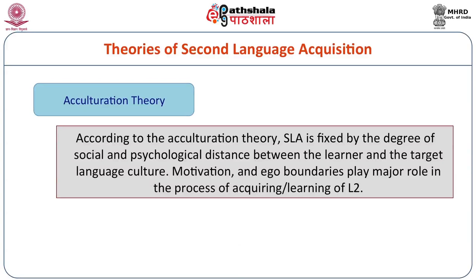According to the acculturation theory, SLA is fixed by the degree of social and psychological distance between the learner and the target language culture. Motivation and ego boundaries play a major role in the process of acquiring or learning L2. Suppose a person of 40 years of age wants to learn English and is in a class where a 5-year-old child speaks English very well while he cannot understand or write a single page — then the ego comes into play. That is the ego barrier to learning.